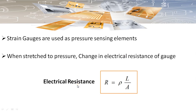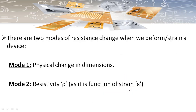The electrical resistance of a material, whether it is a conductor or semiconductor, is given by R = ρL/A, where ρ is the resistivity of the material, L is the length of the material, and A is the area of the cross-section. There are two modes of resistance change when we deform or strain a device.